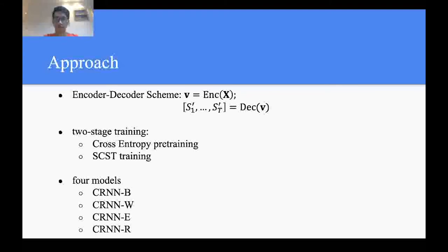Since SCST uses the sample sentence for optimization, we need a relatively reasonable model for initialization. Otherwise, the reward is always very low, so we adopt such a two-stage training approach.